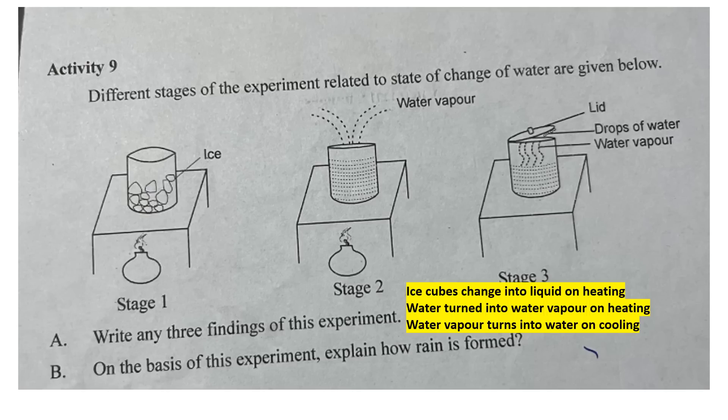On the basis of this experiment, explain how rain is formed. Water undergoes evaporation — it evaporates due to heat from the sun.